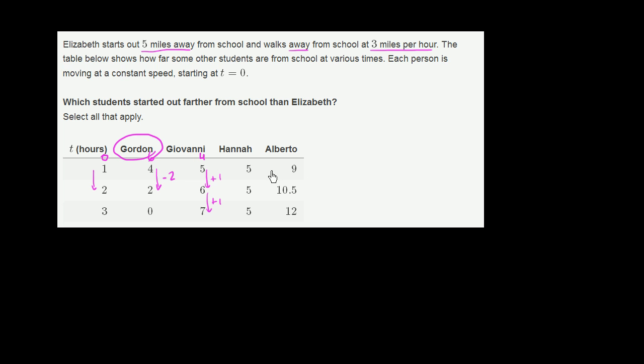Now let's look at Alberto. At time equals 1, he is 9 miles from school. And then after 1 hour, he gets a mile and a half further from school. After another hour, he gets a mile and a half even further.